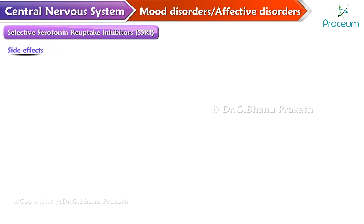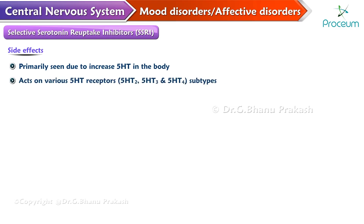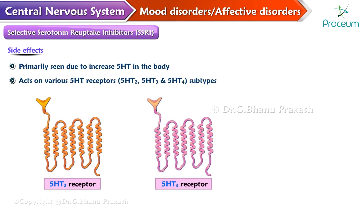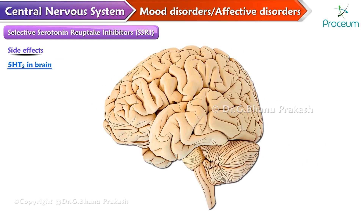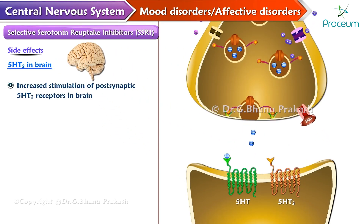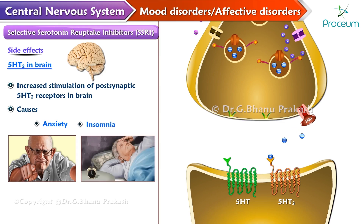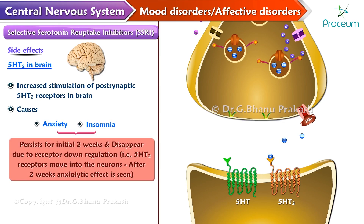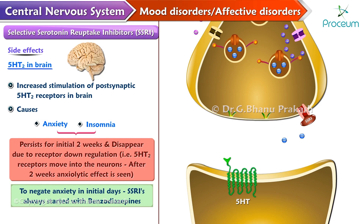Side effects with SSRIs. The side effects with SSRIs are primarily due to an increase in serotonin levels in the body, which acts on various serotonin receptors like serotonin type 2, type 3, and type 4 receptors. Increased stimulation of post-synaptic 5-HT2 receptors in the brain causes anxiety and insomnia. These effects persist for the initial two weeks and then disappear due to receptor downregulation, with 5-HT2 receptors moving into the neurons. So after two weeks, an anxiolytic effect is seen. To negate the anxiety in the initial days, SSRIs are always started with a benzodiazepine.